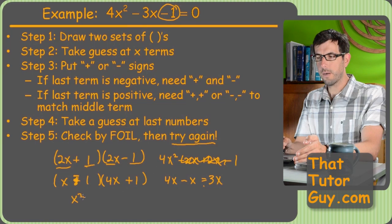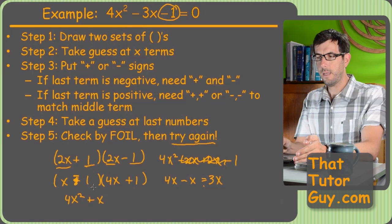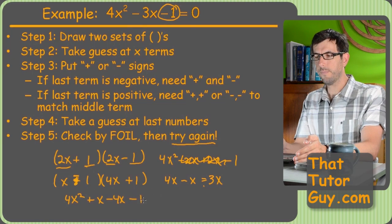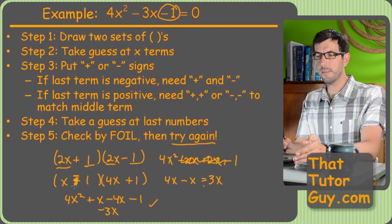So now it should work out. If I foil this out, I get 4x squared plus x minus 4x minus 1. And you notice that negative 4x and x now combine into a negative 3x. So yes, this is in fact the right answer.